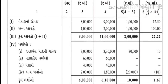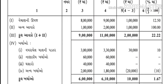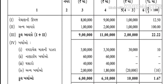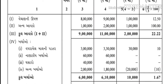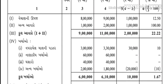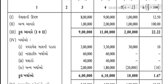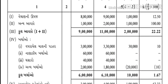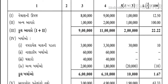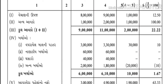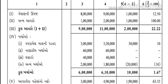ત્યારબાદ નાણાકીય ખર્ચ. ત્યારબાદ અન્ય ખર્ચાઓની અંદર - 2016માં આપણને આપ્યું એક લાખ, અને 2017માં આપણને ત્યાં એક લાખ એંસી હજાર. એમ કરી દઈએ. તો હવે એ ચારેય ખર્ચ છે, એનો આપણે સરવાળો ચકાસીને કરી નાખીએ.